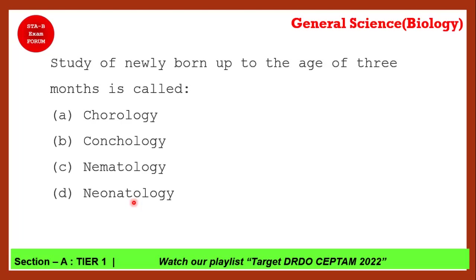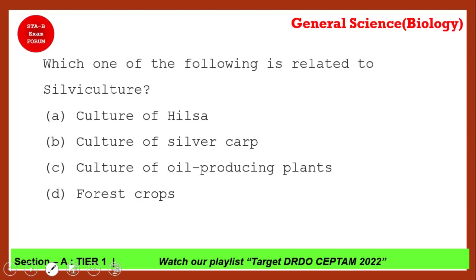Which of the following is related to silviculture? Option D is correct — silviculture is related to forest crops.